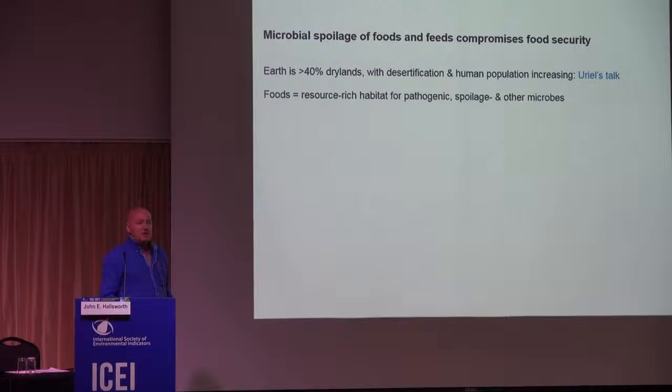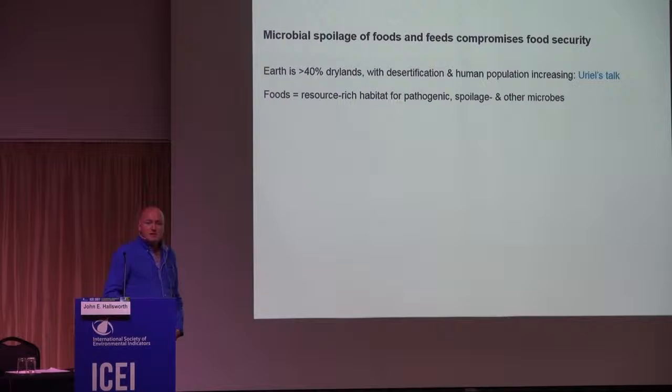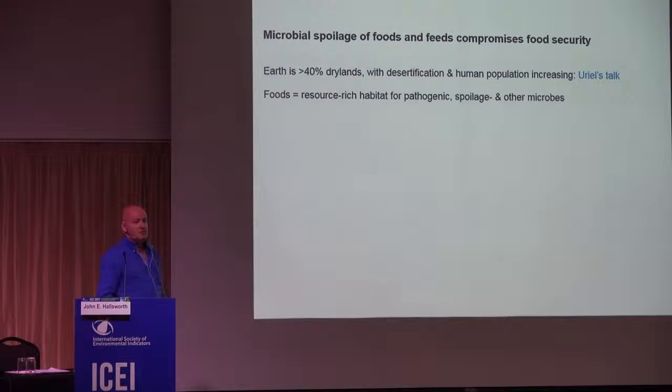Microbial spoilage of foods and feeds is a very important issue in terms of local food security. As Oriel said in his talk on the first day, the earth is more than 40% dryland, at the threshold of planetary Earth. Desertification is increasing, human population is rising, and food security is a huge problem. Foods, from the viewpoint of microorganisms, are a resource-rich habitat, so it's no surprise that so many foods are spoiled or contaminated with pathogenic species.